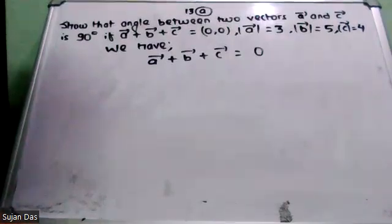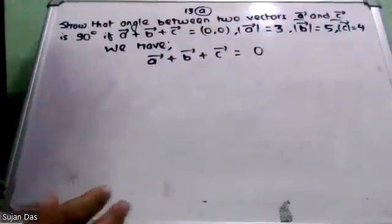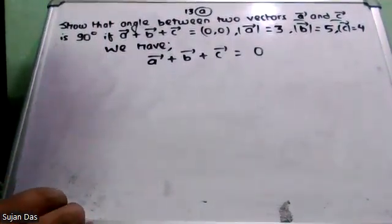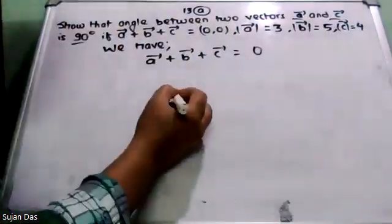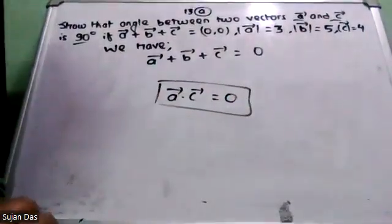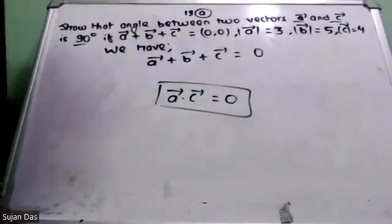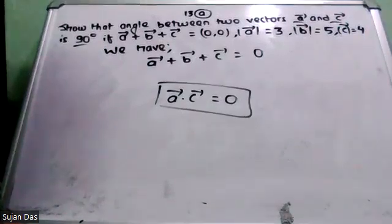We need to find the angle between vector A and vector C. We know the angle between vector A and vector C — to find it, if vector A · vector C = 0, that means the angle between them is 90 degrees. So vector A · vector C = 0.